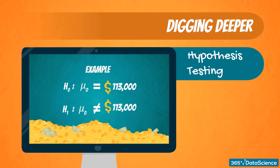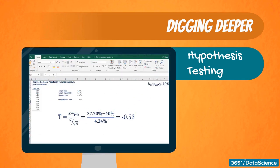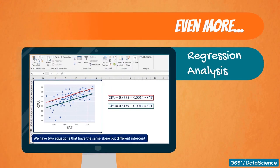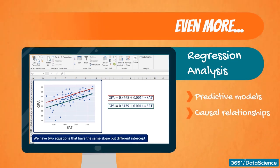Then, we will move on to hypothesis testing, which is at the heart of decision making. Each data-driven decision comes after a hypothesis test. You will learn how to formulate a hypothesis and act according to the result. In the fourth part of this course, we will dive into the world of regression analysis. Regression analysis is a powerful tool that allows us to build predictive models based on causal relationships. Specifically, we will concentrate on the OLS setting, the most widely used method for conducting regression analysis.